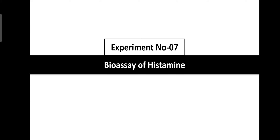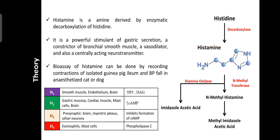Histamine is an amine derived from histidine by enzymatic decarboxylation of histidine. Histamine is a powerful stimulant of gastric secretions, a constrictor of bronchial smooth muscle, as well as a vasodilator of small blood vessels.